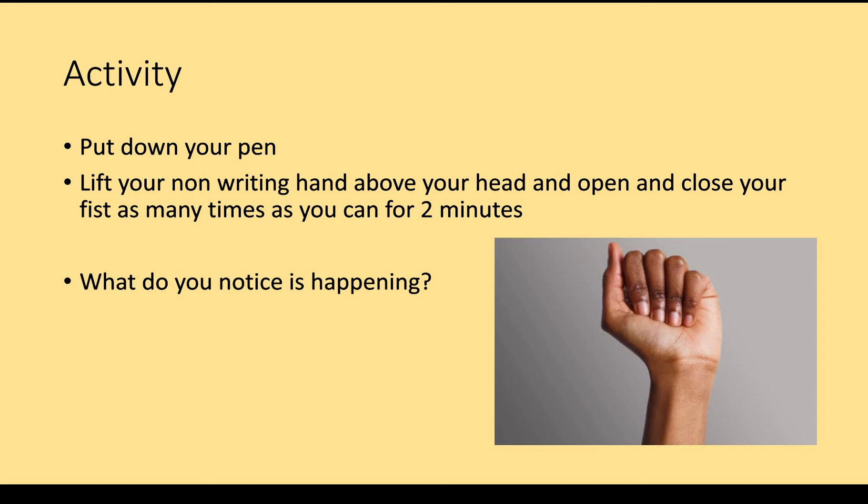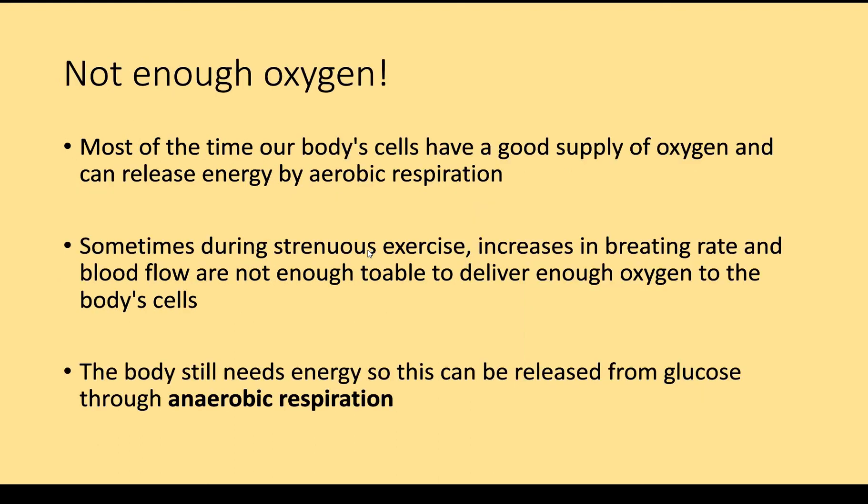Three, two, one — put down your arm. Shake your arm around a bit. Hopefully you noticed some kind of reaction there. So what was going on was that there was not enough oxygen. Most of the time your body's cells have a good supply of oxygen and can release energy by aerobic respiration, as we know. But sometimes during strenuous exercise, we increase our breathing rate and blood flow, but that's not enough to deliver enough oxygen to the body's cells. The body still needs energy — we still need to keep clenching and unclenching our fist — so we release this from glucose stored in our body through a process called anaerobic respiration.